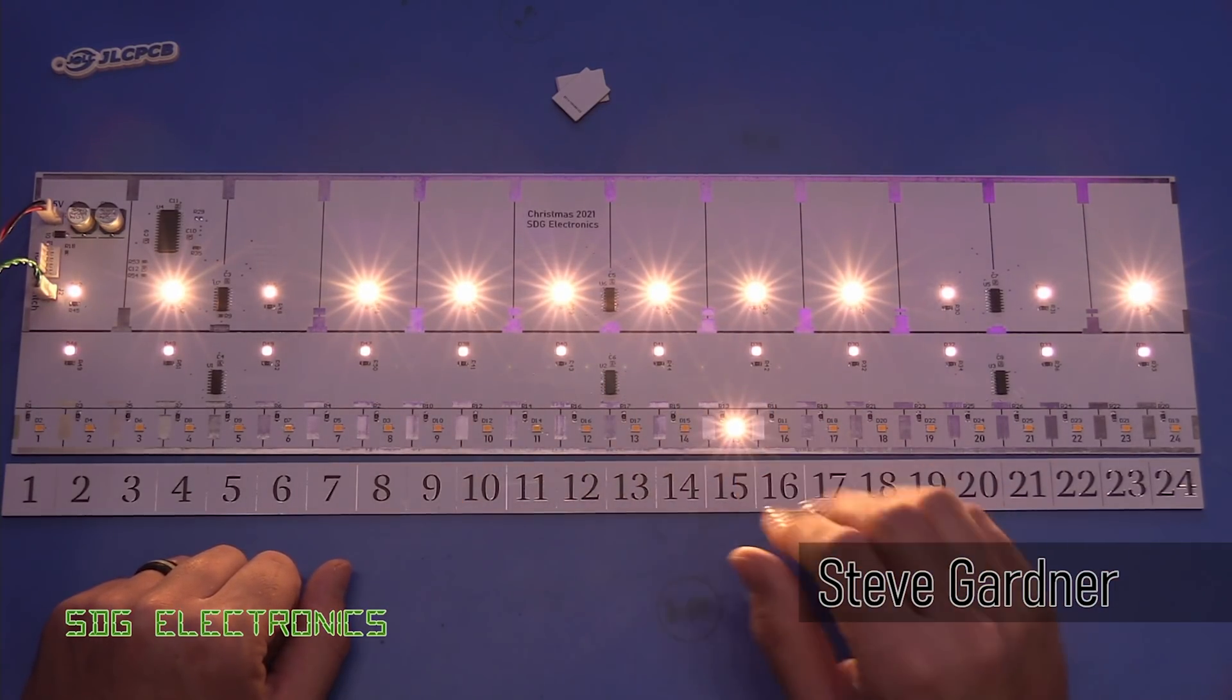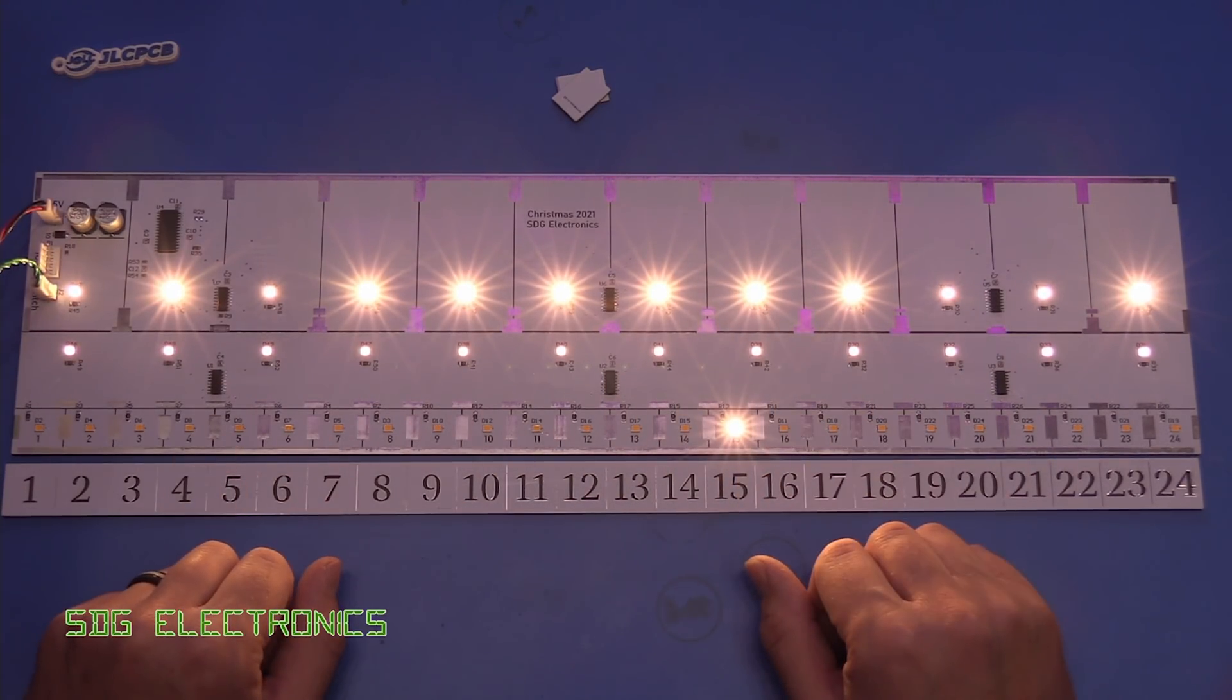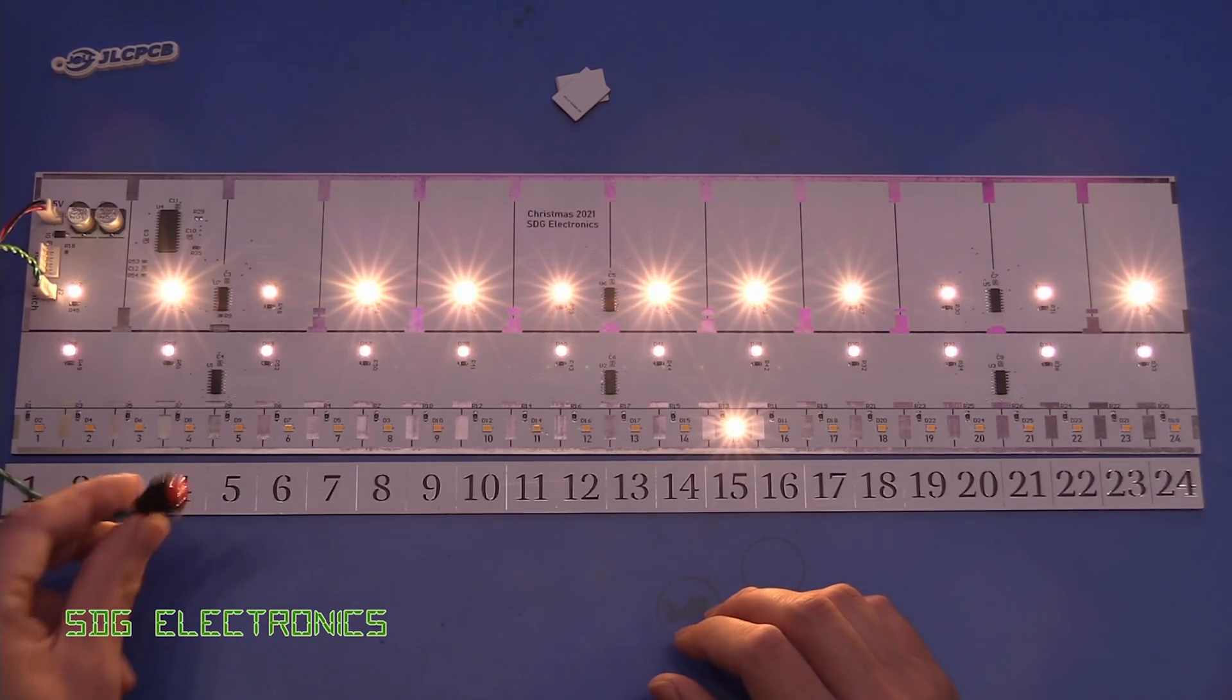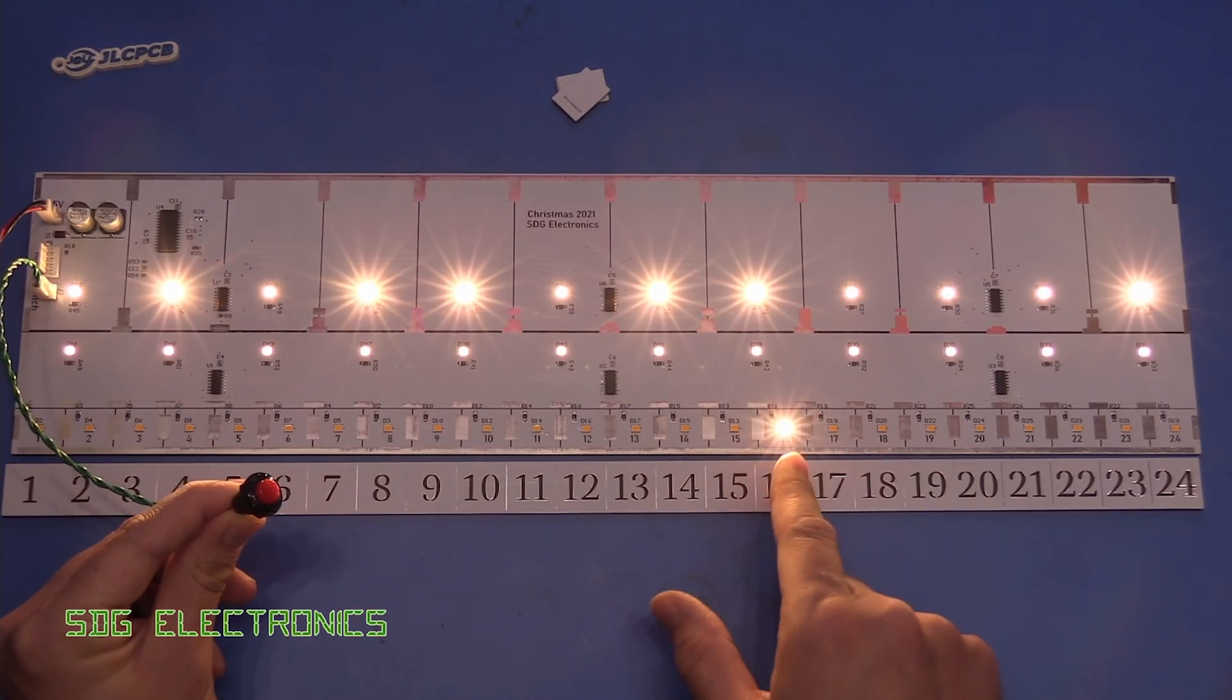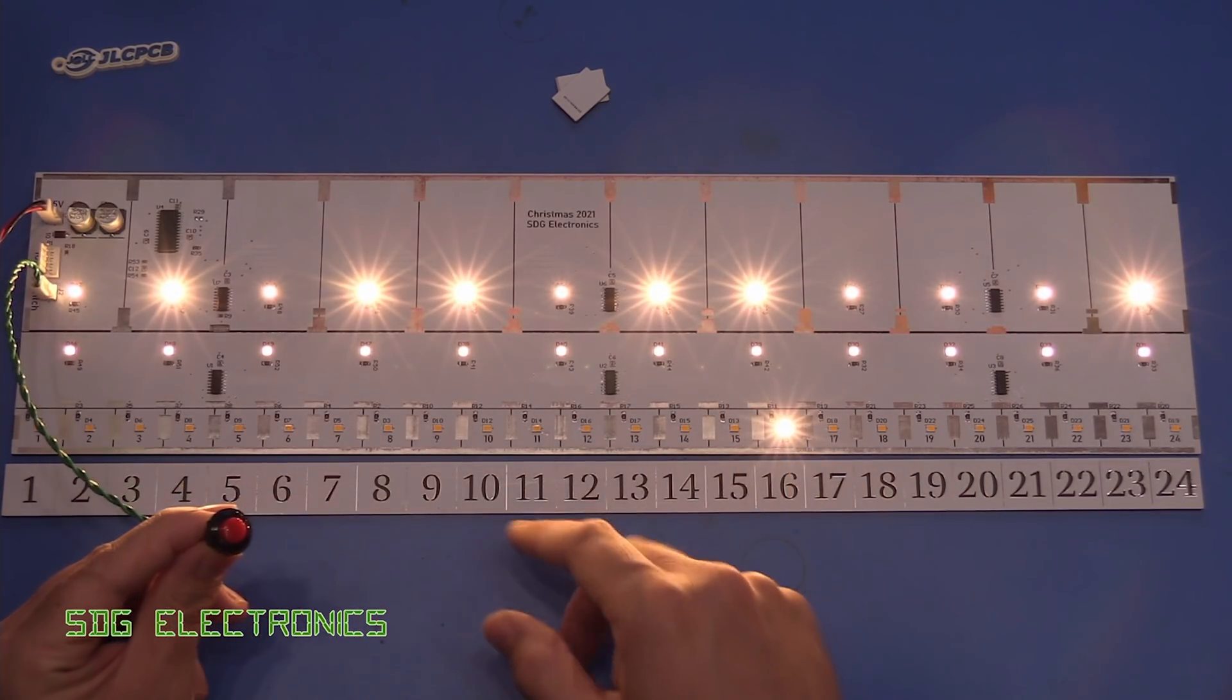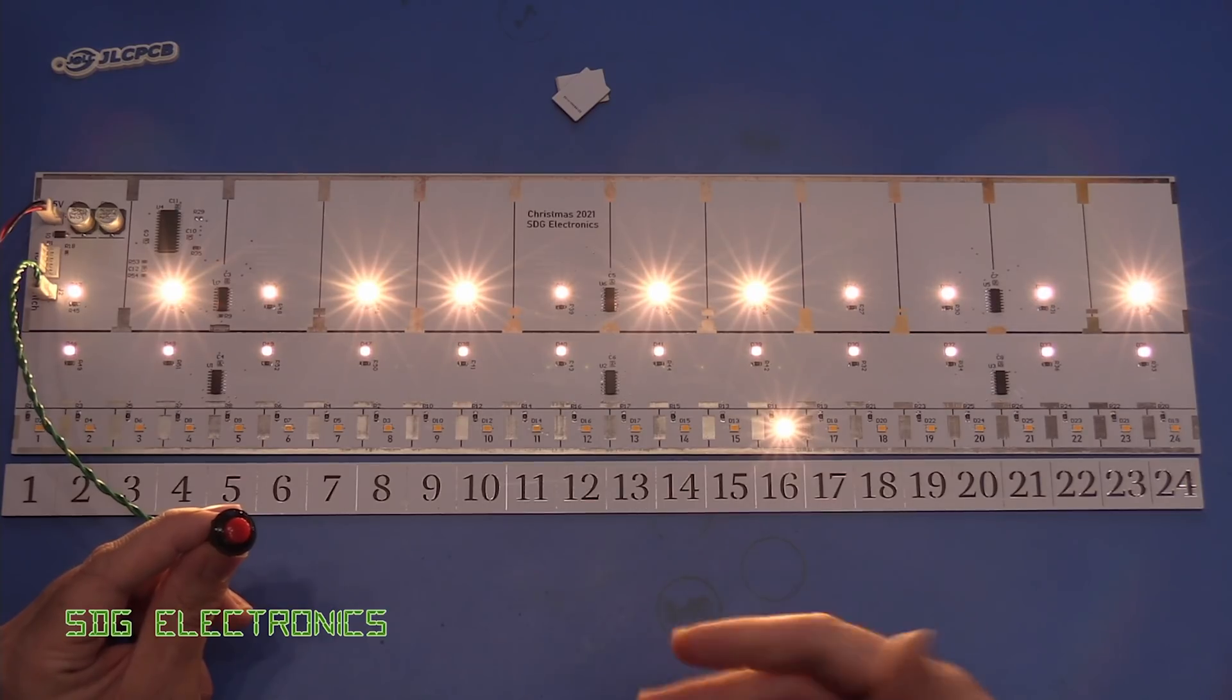Since then I've written all of the firmware so we've now got it running on the board. The idea is that there's going to be this switch mounted to it and every time you press it it advances the day by one. Every time you press the button it stores which day it is in non-volatile memory so that if you turn it off, when you turn it back on the next day it stays on the correct date.